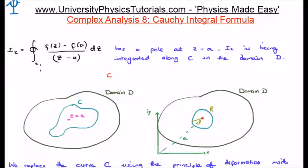So, we go from having the circle, or excuse me, the contour c, to having the contour capital R, which has a radius of rho.